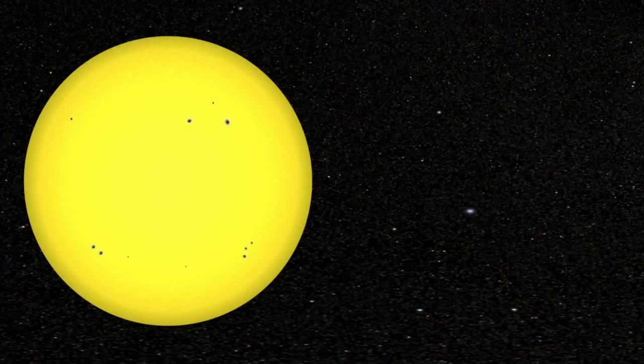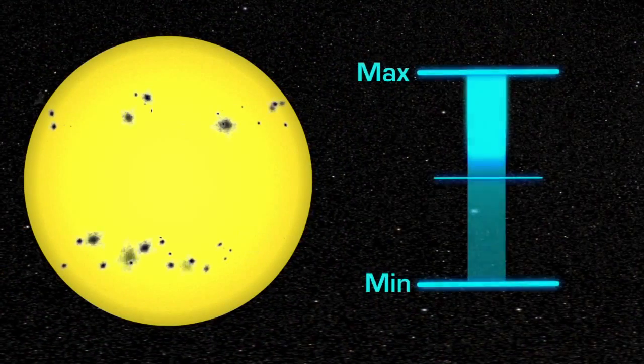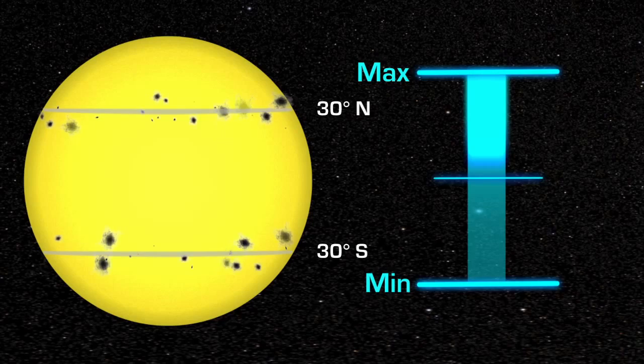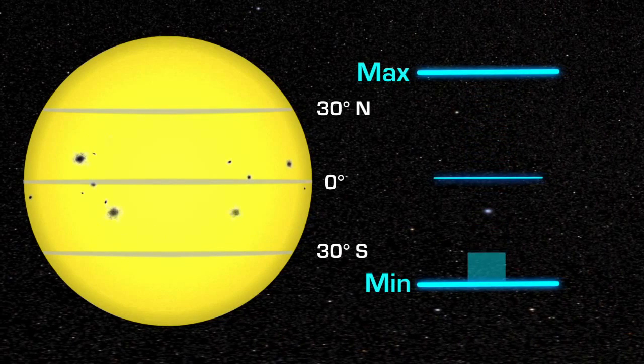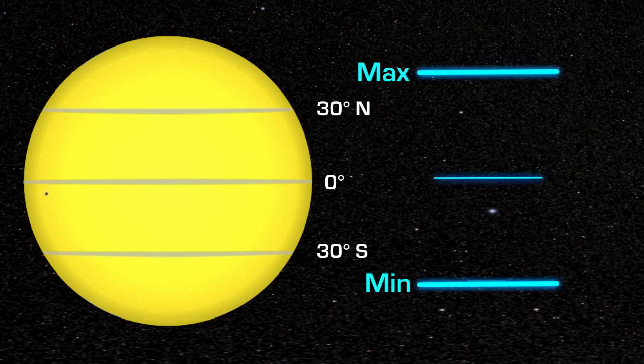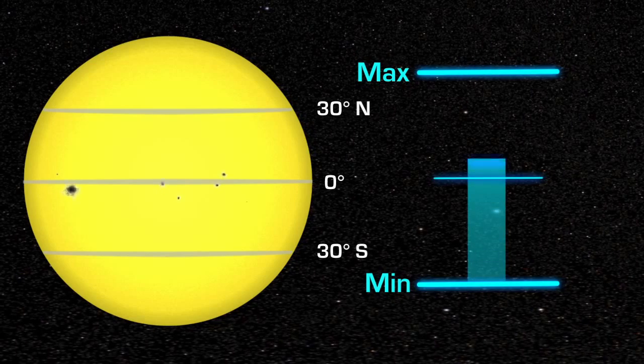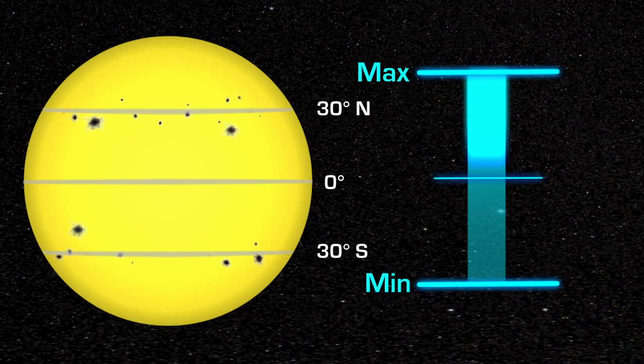During this cycle, the location of the sunspots also changes. They are at middle latitudes during solar maximum and move closer to the equator as the Sun approaches solar minimum. At solar minimum, there are sometimes no sunspots to observe. At solar maximum, there can be many at the same time.